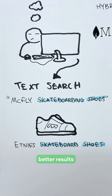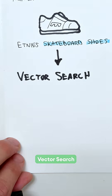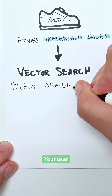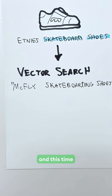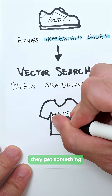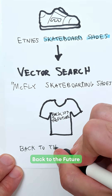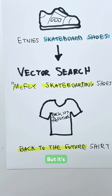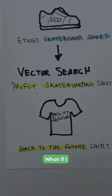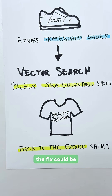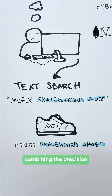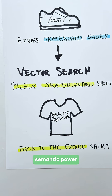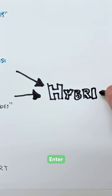You hope for better results by implementing vector search. Your user searches again and this time they get something related to Back to the Future, but it's a shirt, not shoes. What if I told you the fix could be combining the precision of text search with the semantic power of vector search into one?